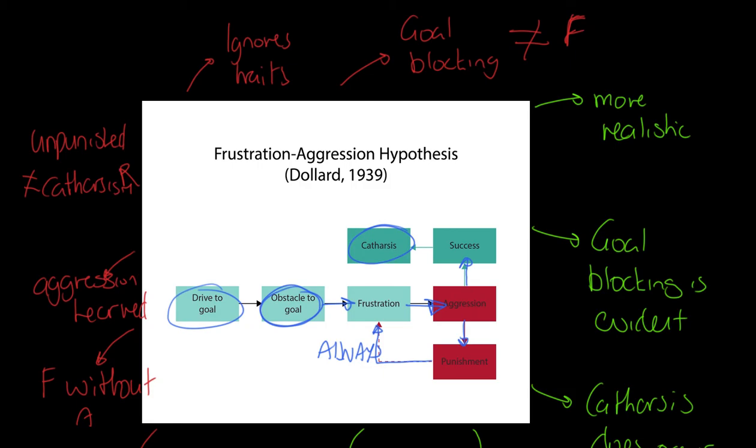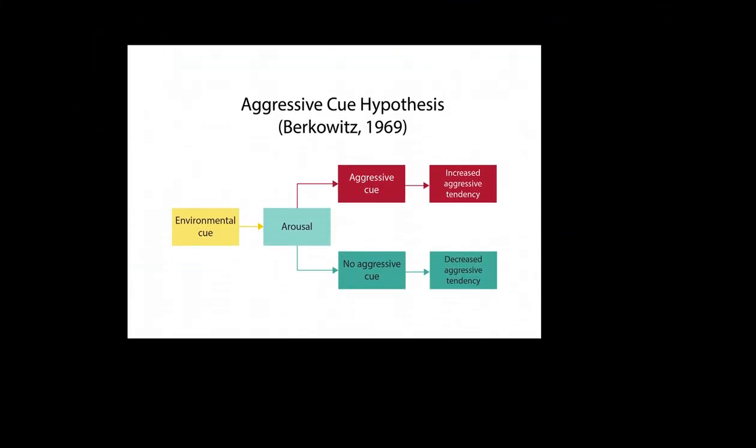To finish off, we're going to have a look at the Berkowitz Aggressive Cue Hypothesis. It's a great way to think about this - it's a scapegoat theory. It's like kicking the cat because you're frustrated with something else. Don't kick a cat, I mean it metaphorically.